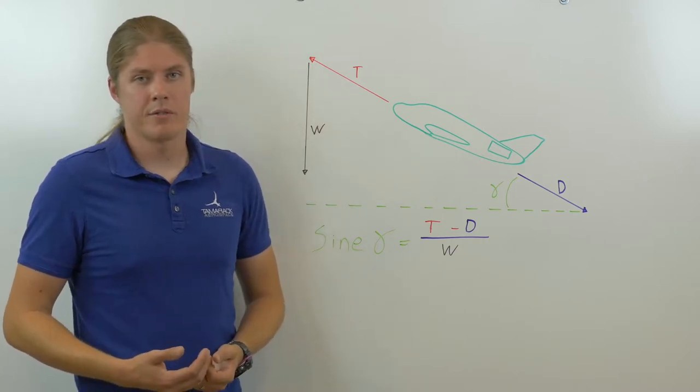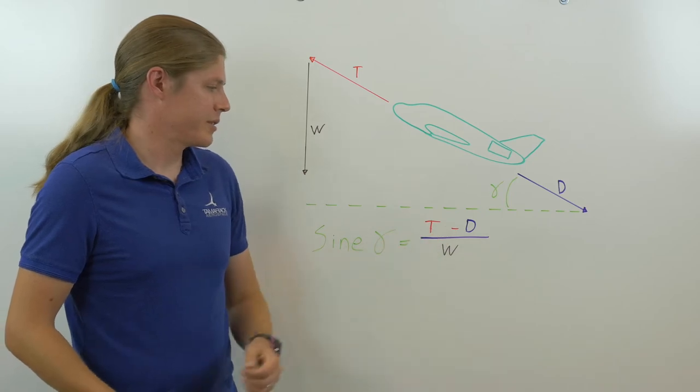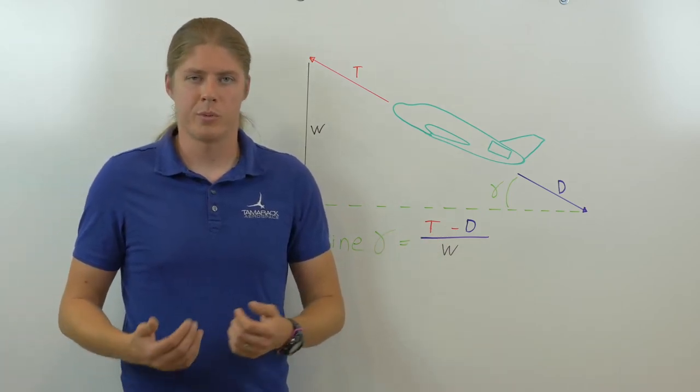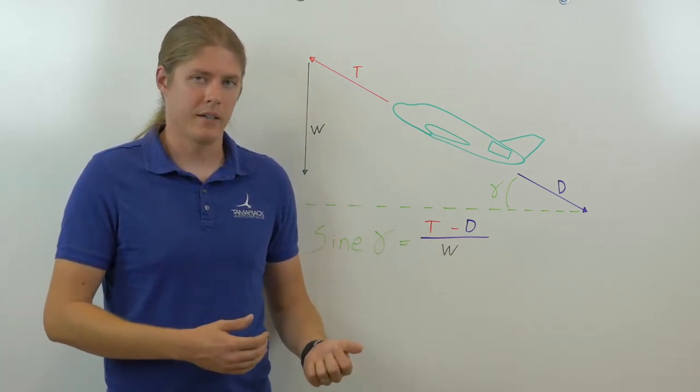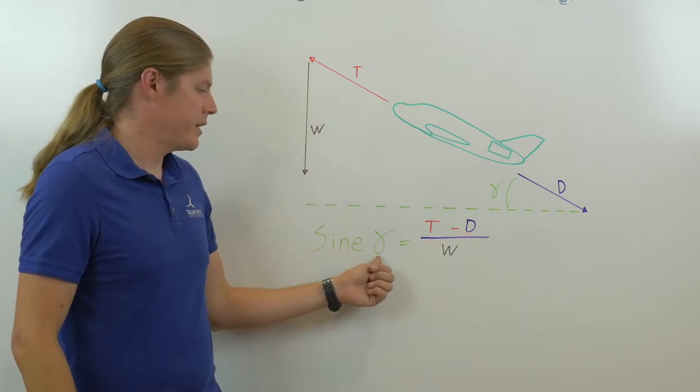Different companies are going to be focused on different parts of this. A winglet manufacturer, for instance, will care about D, because winglets provide a net decrease in drag. And a net decrease here means a net increase here.